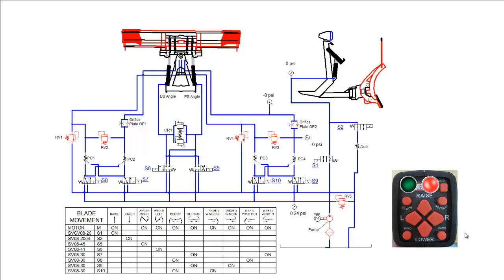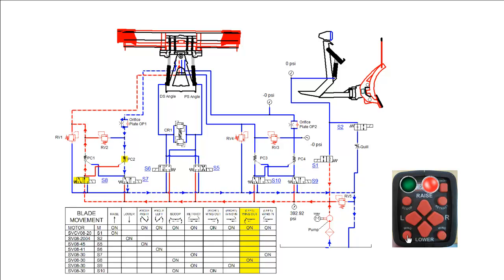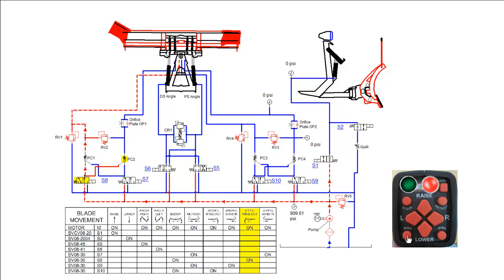We will now perform the left wing extend function. We begin by pushing the left wing button on the snowplow control. Hydraulic fluid from the pump flows through the shifted S8 cartridge, through PC1, applying pilot pressure to PC2, to the base end of the left wing ram. The extending ram pushes the return fluid through the rod end of the ram, past the orifice plate, through PC2, S7, and back to tank. When fully extended, the pump pressure will build to the RV2 wing relief valve setting and directly back to tank.